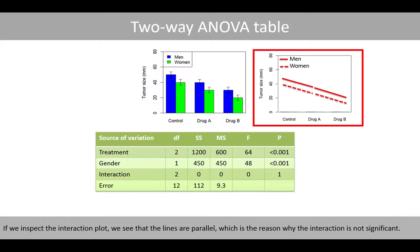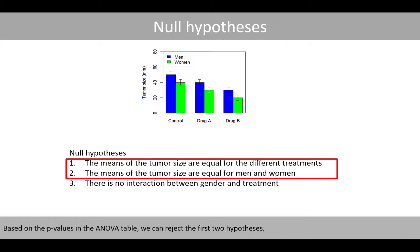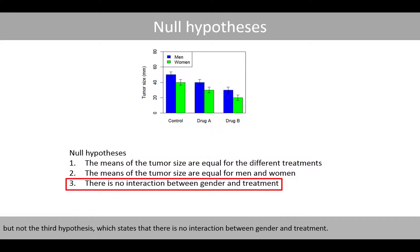If we inspect the interaction plot, we see that the lines are parallel, which is the reason why the interaction is not significant. Based on the p-values in the ANOVA table, we can reject the first two hypotheses, but not the third hypothesis which states that there is no interaction between gender and treatment.